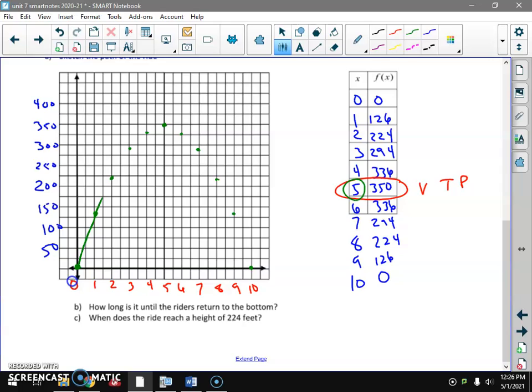X axis is time in seconds. Y axis is feet above the ground. We can answer some questions. I can answer a lot of questions off this graph.